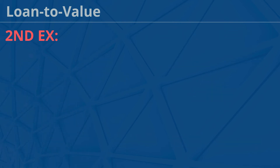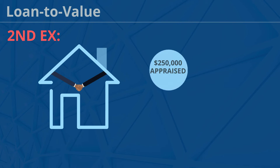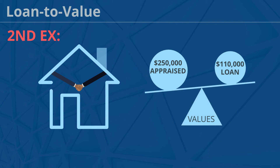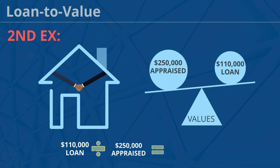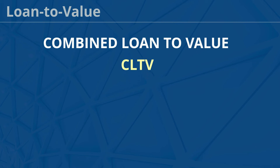For our second example, we're going to consider a refinance transaction. The borrower's property appraised for $250,000. The loan amount for their refinance is $110,000, so on this one we'll take the $110,000 loan amount divided by the $250,000 appraised value to get a loan-to-value ratio of 44%.